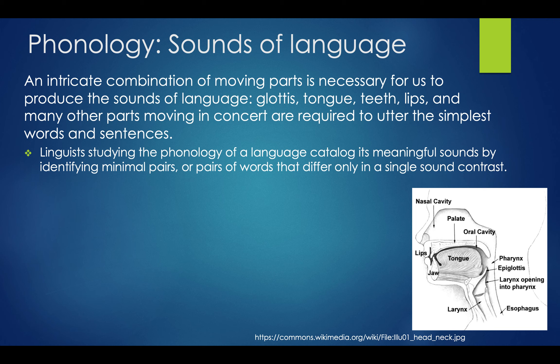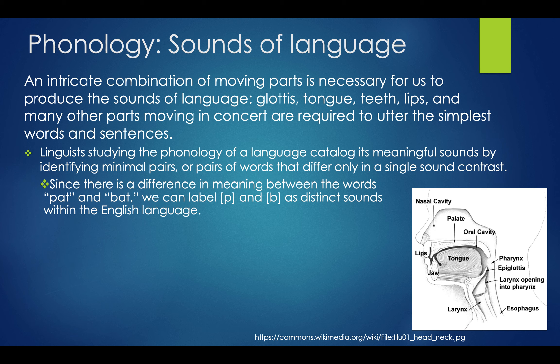Linguistic anthropologists who study phonology catalog meaningful sounds by identifying minimal pairs — pairs of words that differ only in a single sound contrast. What we're specifically identifying are called phonemes (P-H-O-N-E-M-E-S) — the basic sounds that are present and significant in a specific language. When we talk about minimal sound contrasts, we might compare words like 'pat' and 'bat,' which mean very different things, so P and B are distinct sounds within English.